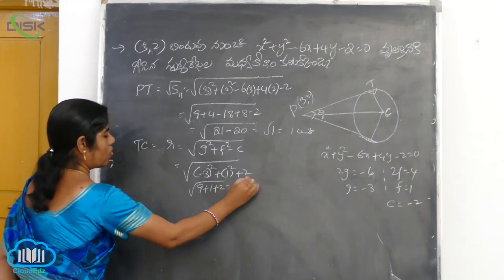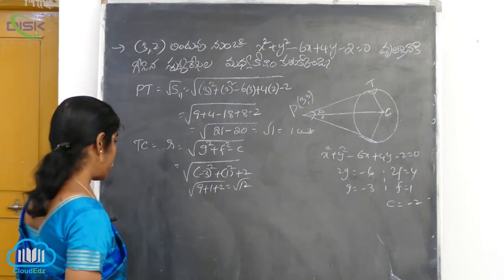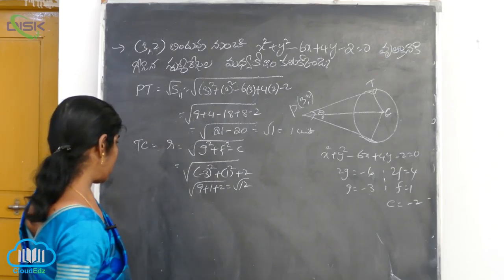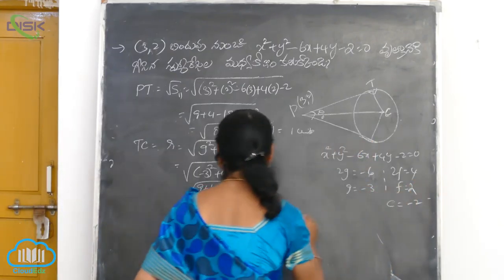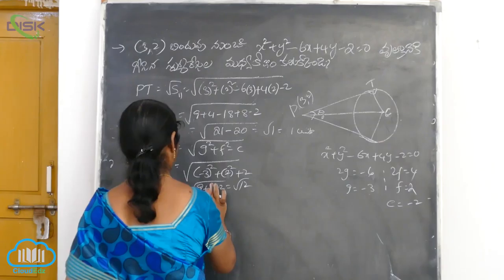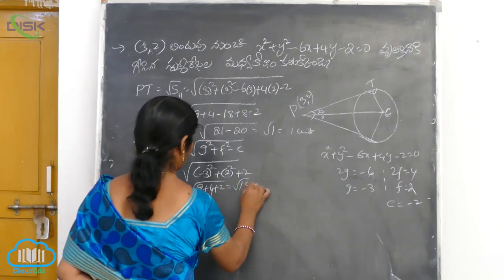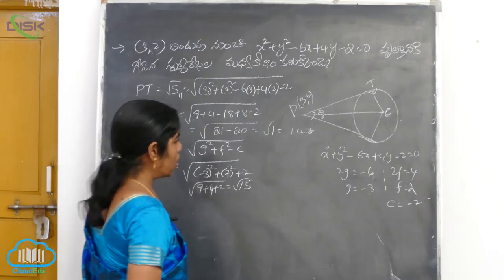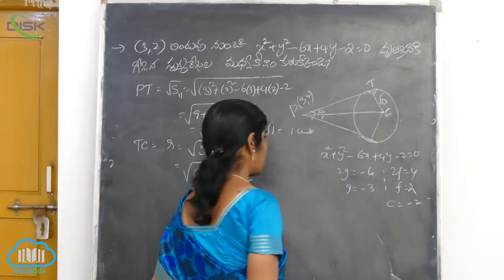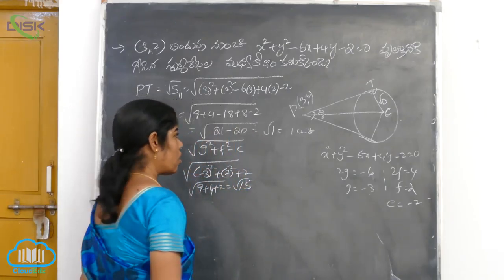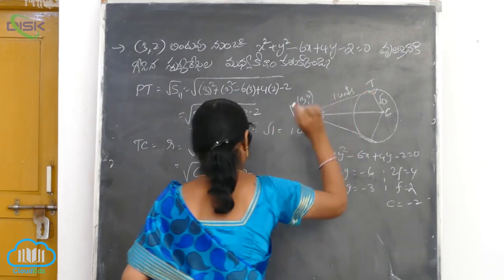10 plus 2 is 12, so radius is root 12 units. And g square plus f square minus c — f is equal to 2, so 2 square is 4, giving 13 plus 2 is 15 units. So the distance from center to point and treating it as radius gives root 15.